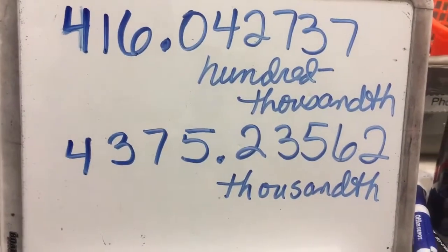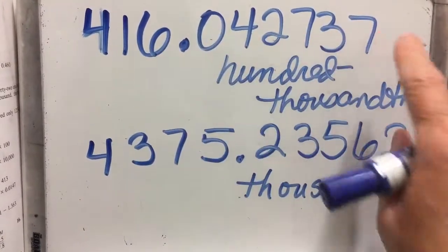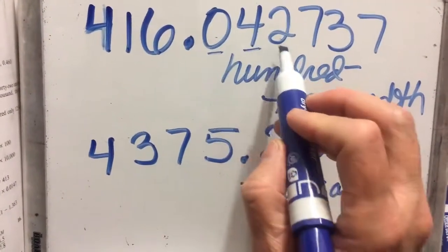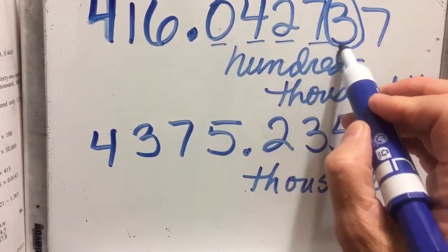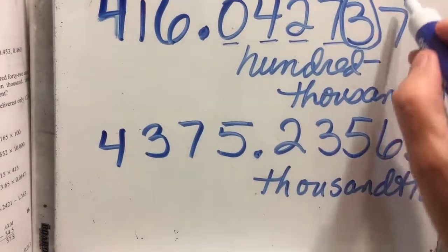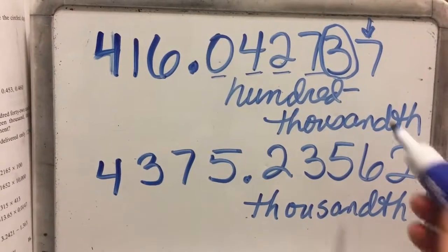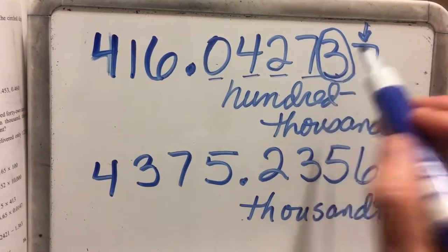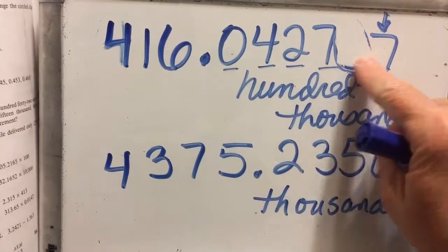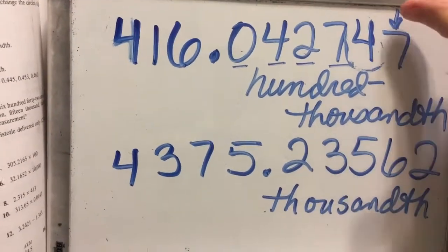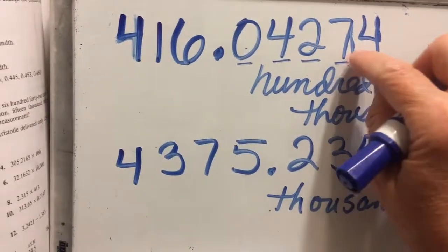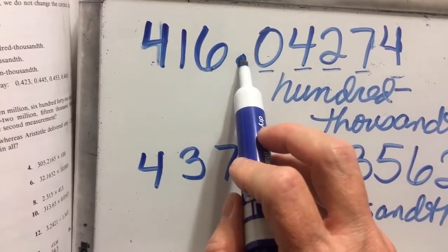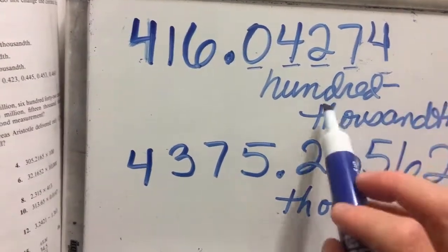For our first practice problem, we have 416 point something big, and we're rounding to the hundred-thousandths place. Counting the places: tenths, hundredths, thousandths, ten-thousandths, hundred-thousandths — that's the fifth decimal place. The arrow goes on the digit after it. Since that arrow number is bigger than five, we round up by one digit. The digit after the rounded place becomes zero and falls off. Our answer is 416 and 4,274 hundred-thousandths.